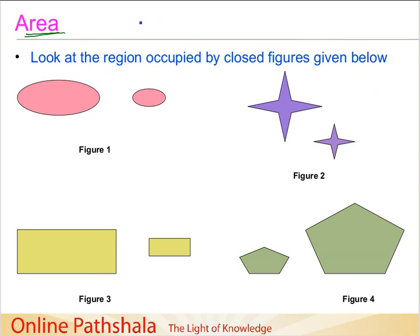Let us take another example. There is a new house being constructed and when you are constructing a new house you have to put in the tiles on the floor. How do you find out how many tiles are required? The tiles required are going to be based on the region covered by your house. The third example is a farmer who wants to sow seeds in his field — how does he decide how much seed he needs to cover the entire field? These are three scenarios where we are interested in measuring the region occupied by some figures or objects.